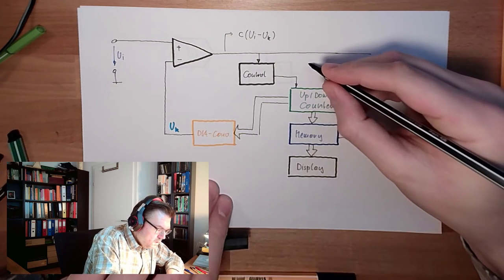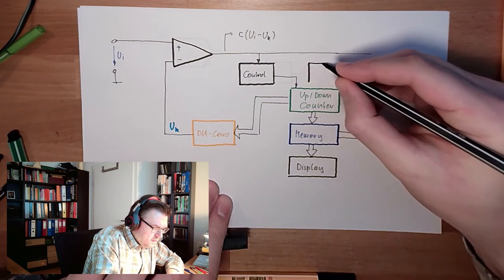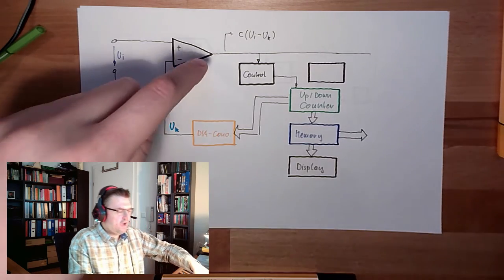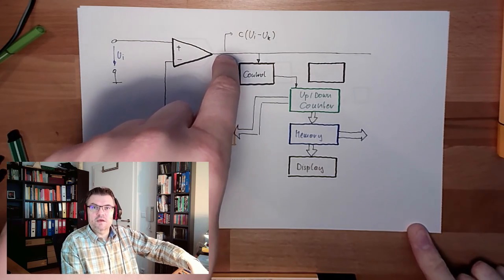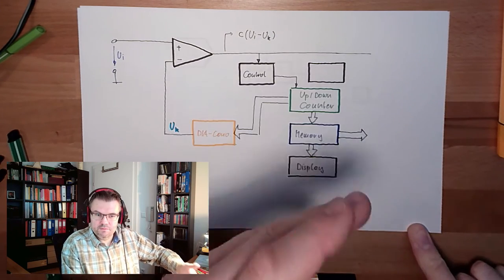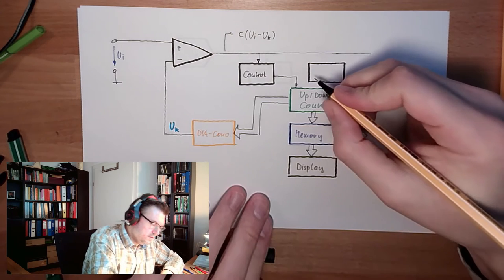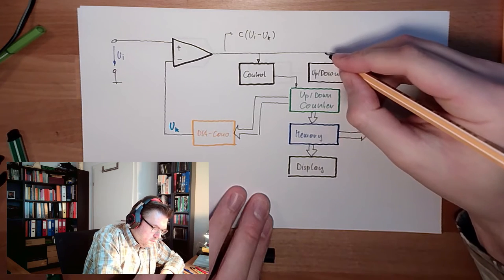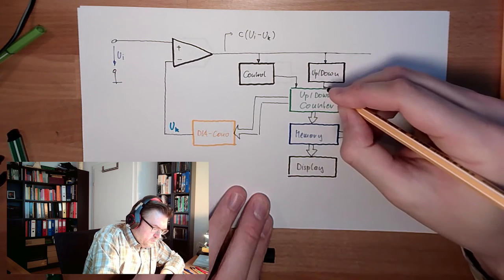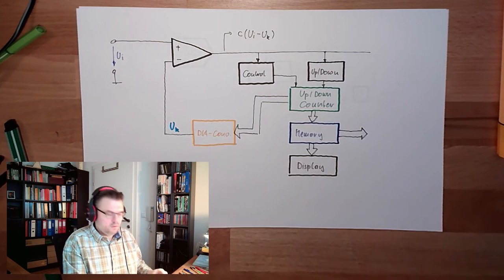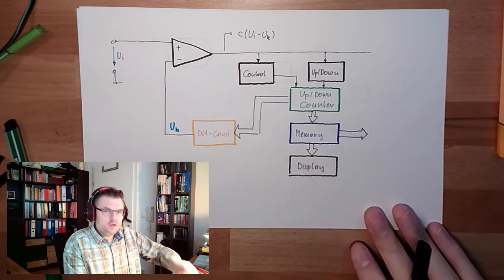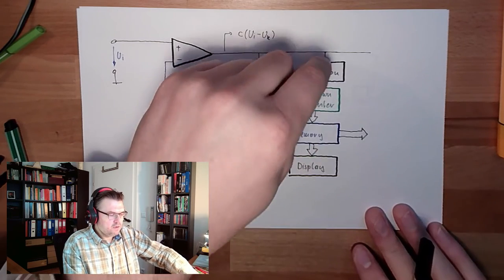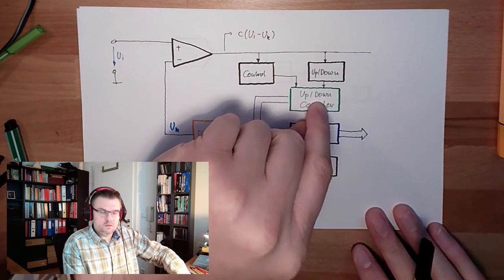Then we need something which can distinguish if the sign of this voltage is positive or negative. So actually this is a comparator with zero volts. I call it up-down logic. And this will switch to up and down. The control, if it's small enough, stop counting, copy to memory. Up, down. If it's negative, count down. If it's positive, count up.